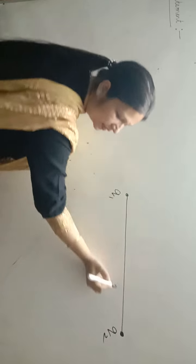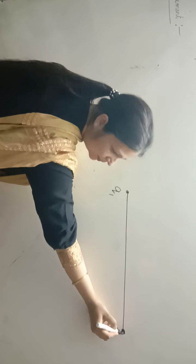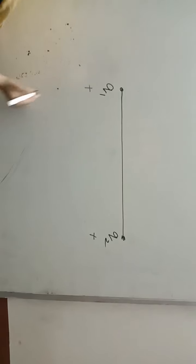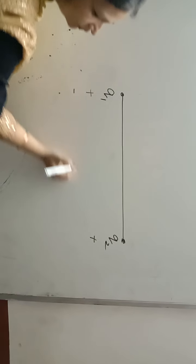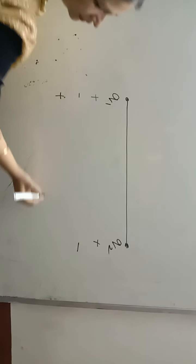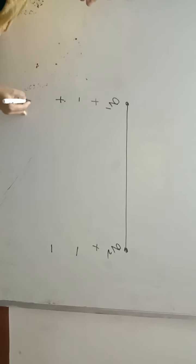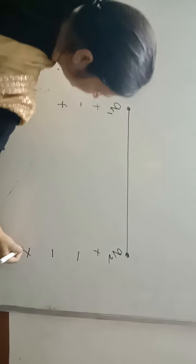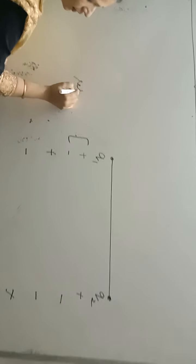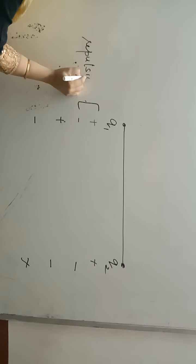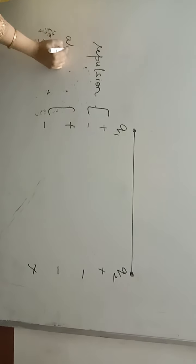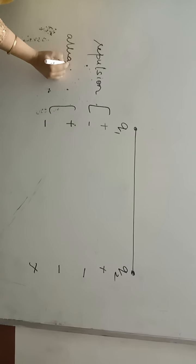These two charges can be of the same type: positive-positive or negative-negative — in which case repulsion occurs. Or they can be opposite: positive-negative or negative-positive — in which case attraction occurs.